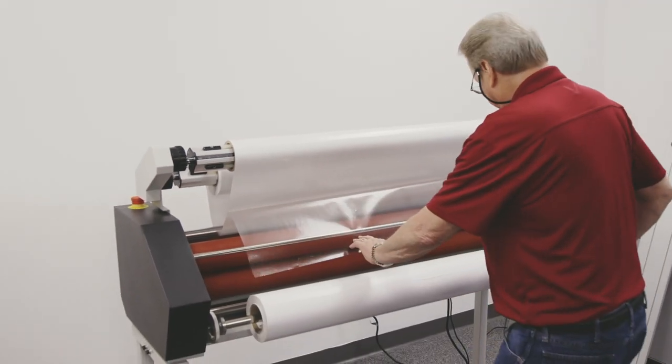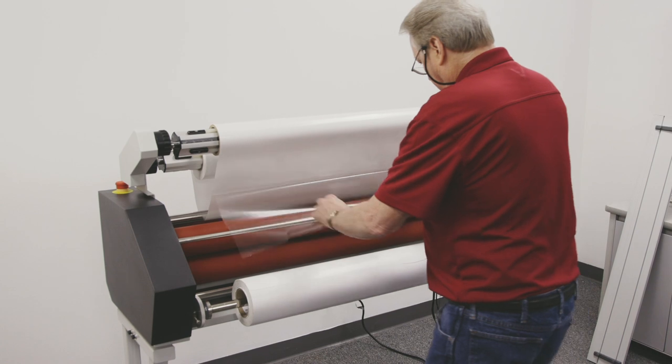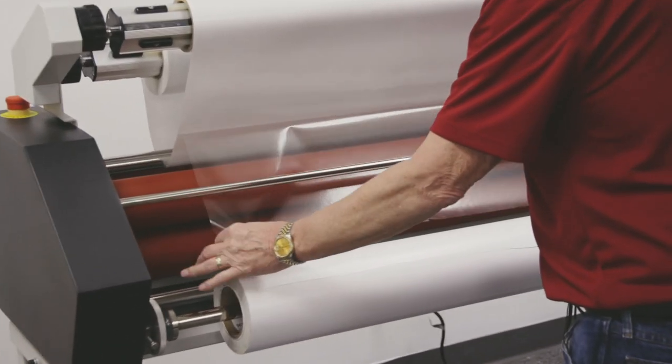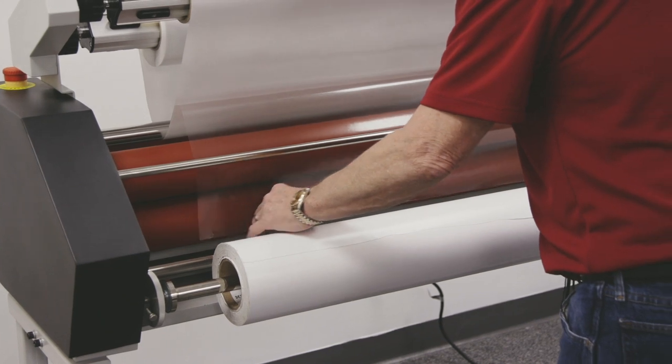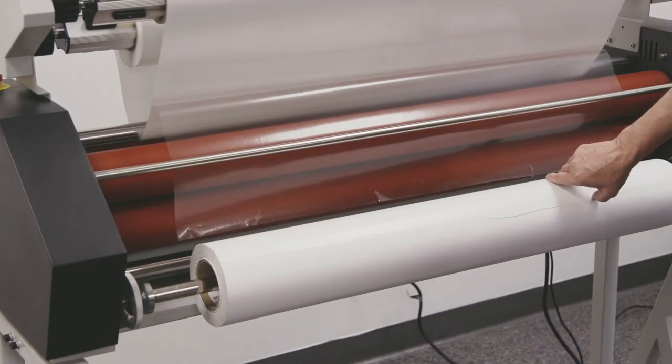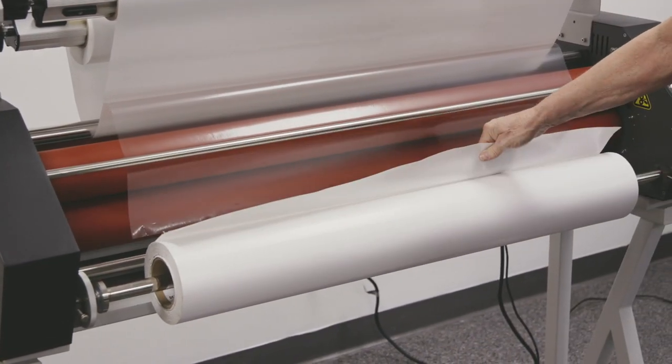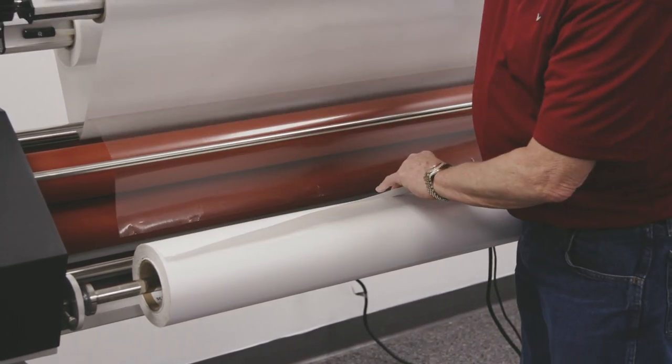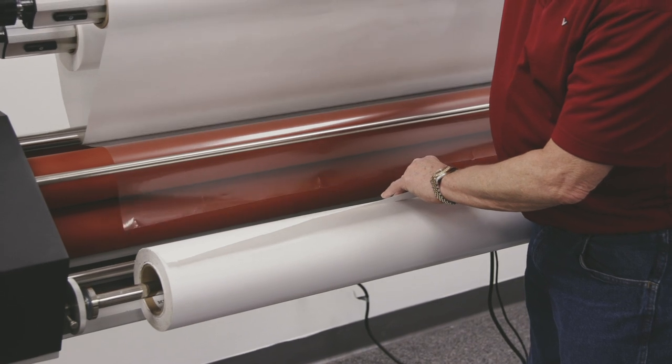I'll bring that film down and I'll drape it over the rollers like this. Then I'm going to bring this mounting adhesive up and I'm going to tack it right to the film. Go ahead and take up a little bit of that slack.